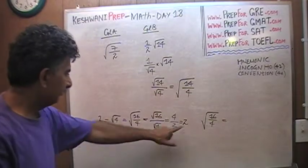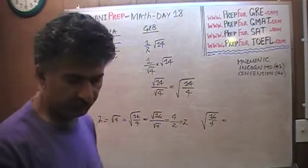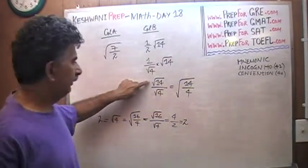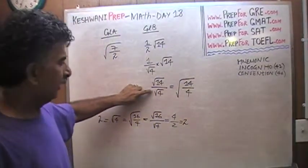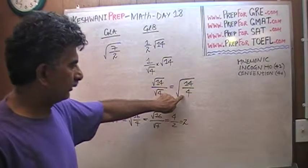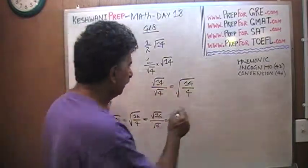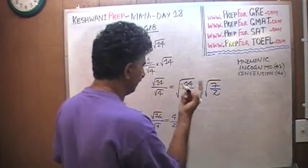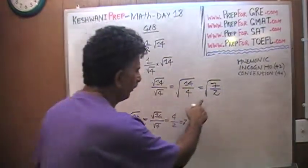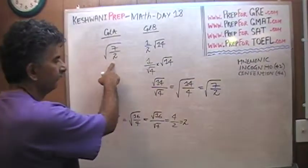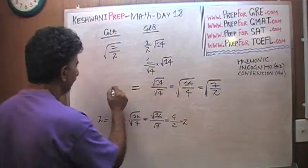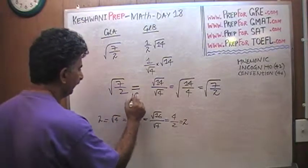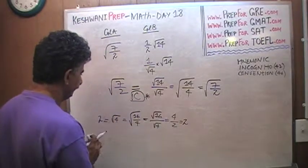The same exact thing applies here. The square root of 14 over square root of 4 can be written as square root of 14 over 4, and square root of 14 over 4 is the same as square root of 7 over 2 because we divide the top and bottom by 2. So this quantity is the same as square root of 7 over 2, and therefore the answer is C. Voilà — the answer is C.